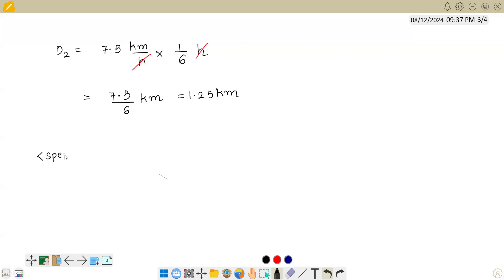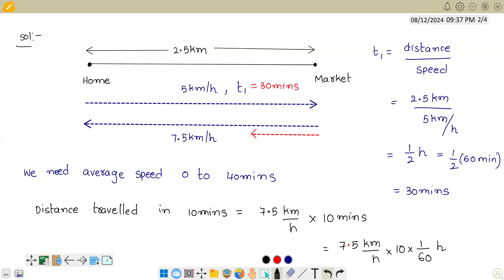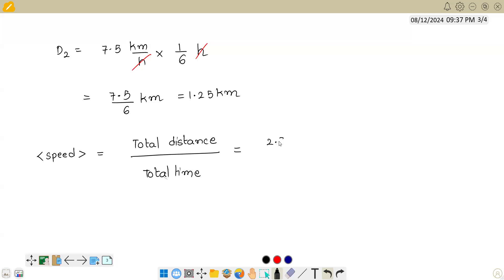What's the definition of average speed? The definition of average speed is total distance traveled by the body divided by total time. So if we try to find total distance traveled by the body, we get 2.5 km in the forward journey plus 1.25 km in the backward journey, and total time is 40 minutes.